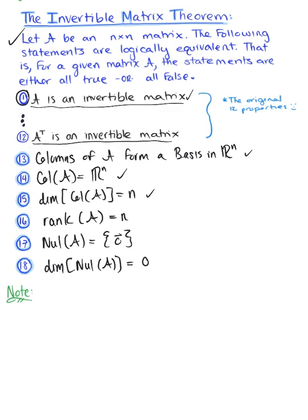So these six new statements are logically equivalent to the original 12. Now one final note here is that we want to recall the definition of the row space of matrix A.